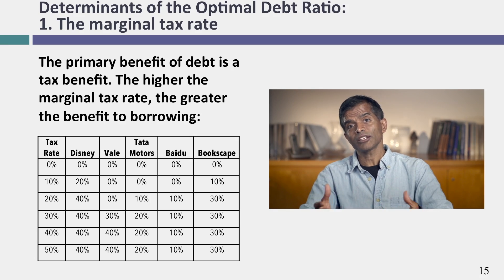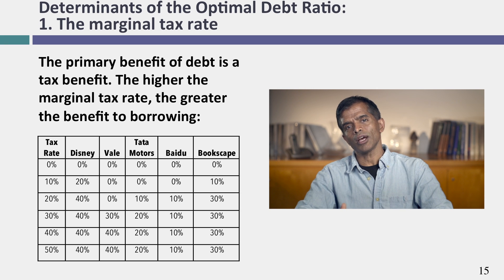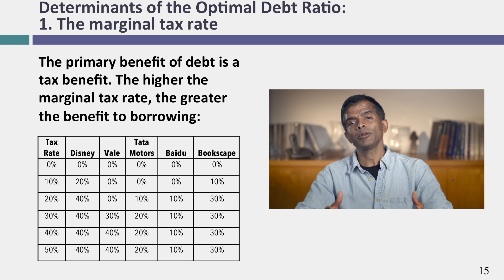Looking at why optimal debt ratios vary across companies — from 0% for Baidu to 40% for Disney — the first reason is the marginal tax rate. As the marginal tax rate goes up, the optimal debt ratio should go up. I looked at what would happen if I let the marginal tax rate go from 0 to 40% or higher: as the tax rate rises, the optimal rises for every company. If the marginal tax rate is 0, the optimal debt ratio goes to 0% for every company, because the biggest single benefit of debt is the tax benefit.